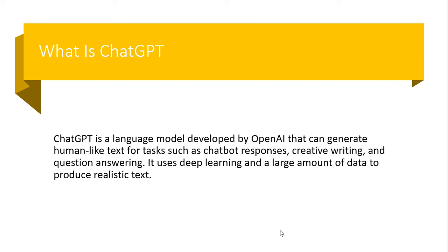We'll see a very sensational product — what is ChatGPT. ChatGPT is a language model developed by OpenAI company that can generate human-like text for tasks such as chatbot responses, creative writing, and question answering. It uses deep learning technology and a large amount of data to produce realistic text.